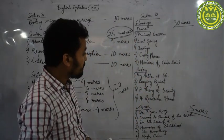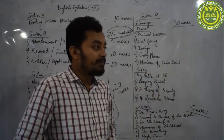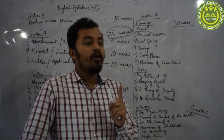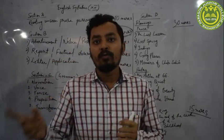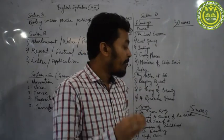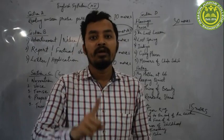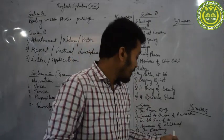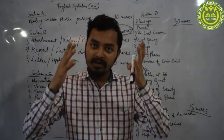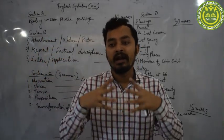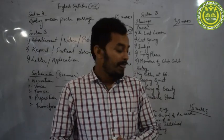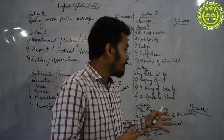Next is Section D — that is the two prescribed texts. From the prescribed text, normally if you answer 1-mark or 2-mark questions and your answers are correct, the examiner will not deduct marks. The problem is with the 5-mark question and the 7-mark question from the supplementary text. For the 5-mark question, if you can present nicely without making spelling errors and your handwriting is correct, you will get full marks.